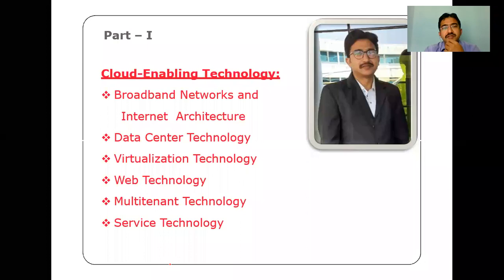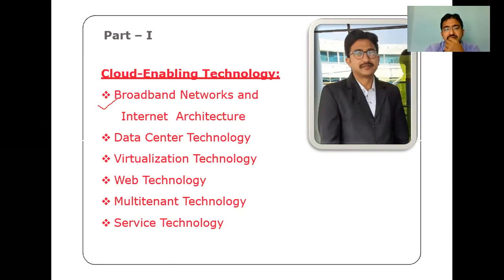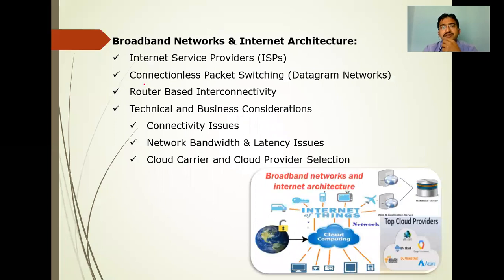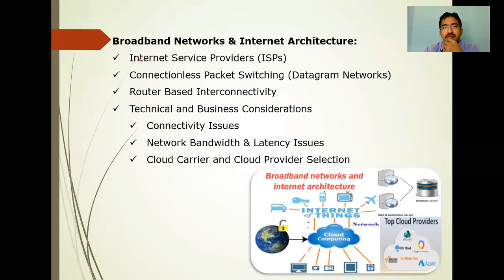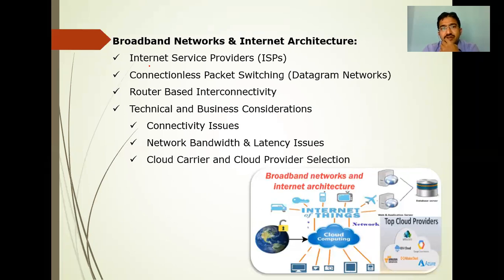Now, coming to part one, which is chapter one of Unit 3, that is cloud enabling technology. In today's class, we will discuss the first topic: broadband networks and internet architectures. The agenda for this topic includes: first, internet service providers, which we call ISP; second, datagrams, also called connectionless — as you already studied in computer networks, TCP is connection-oriented and UDP is connectionless, also called datagram.